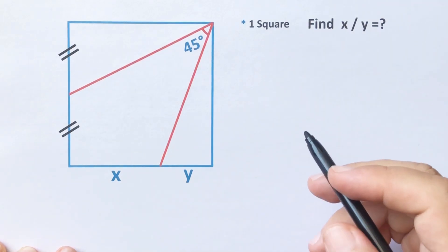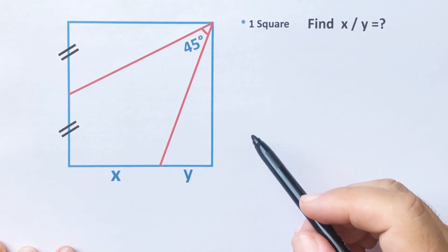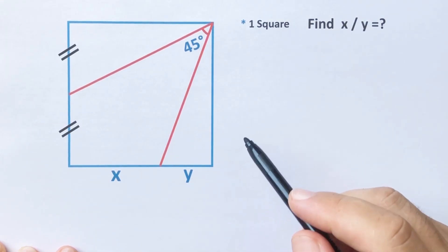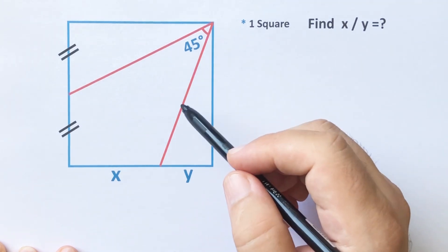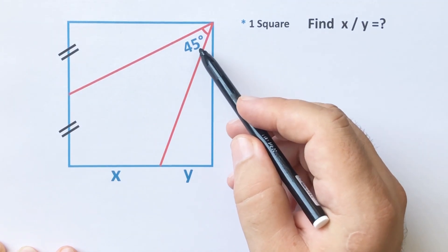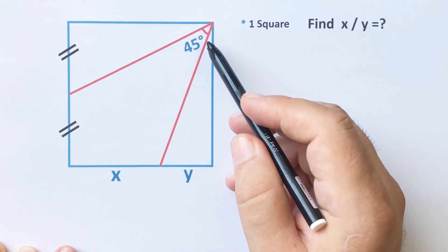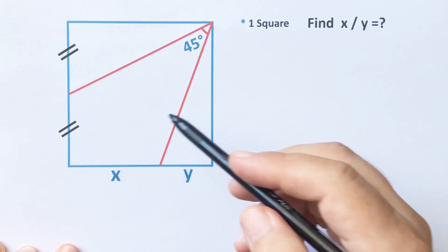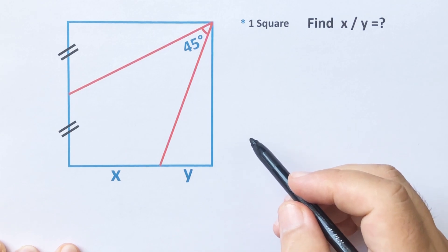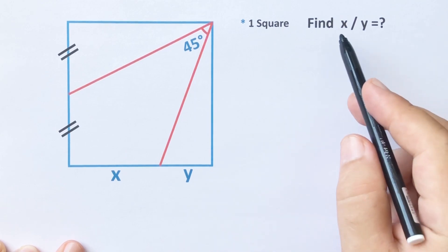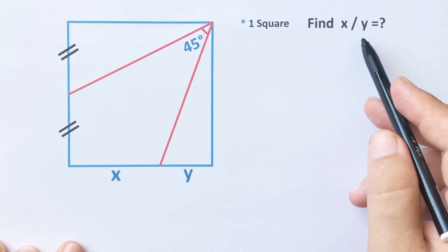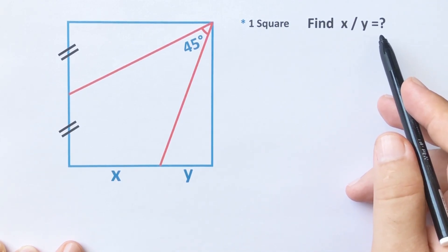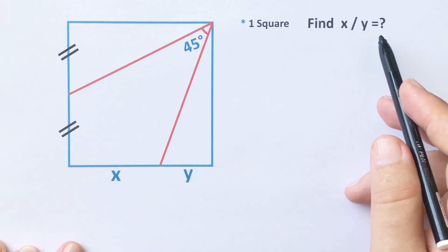Hello everyone. In this video we have one score, here is 45 degrees, and these two parts are equal. The ratio of x over y is asked.